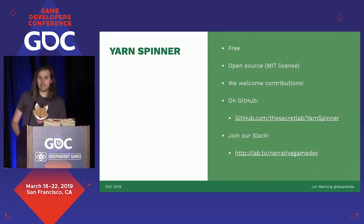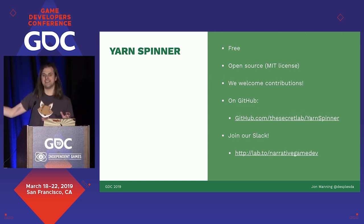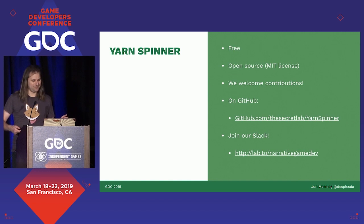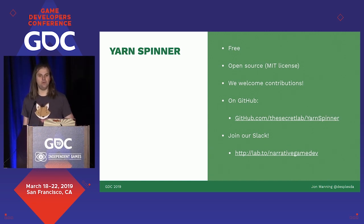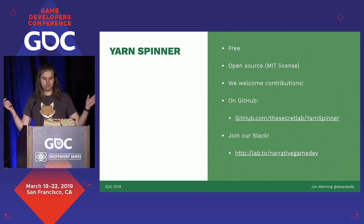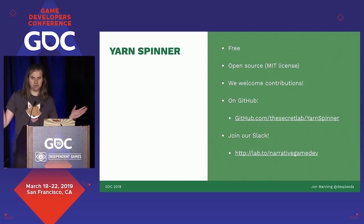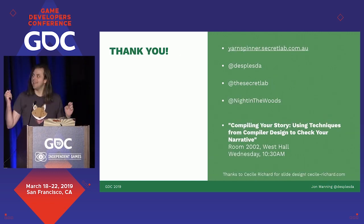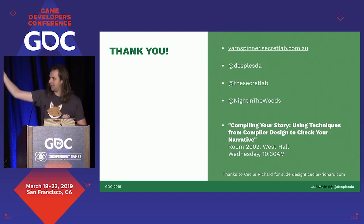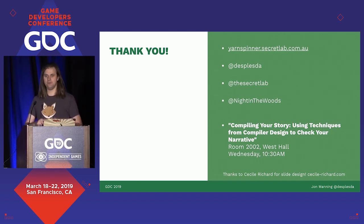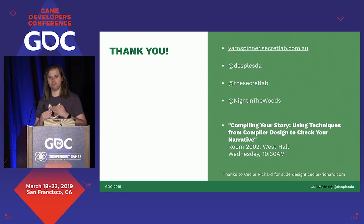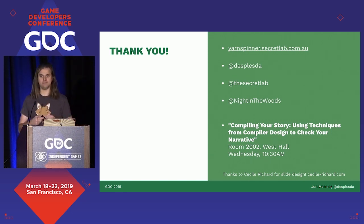Yarn Spinner is free, available right now, open source, under the MIT license — which means you can use it in commercial projects. It's all on GitHub and we welcome contributions. We also have a fairly active Slack where people can chat about how to use Yarn Spinner. I'm also speaking tomorrow morning on some more advanced stuff, like being able to mathematically prove that a line of dialogue is reachable — if you're interested in that, come see me. Thank you very much.